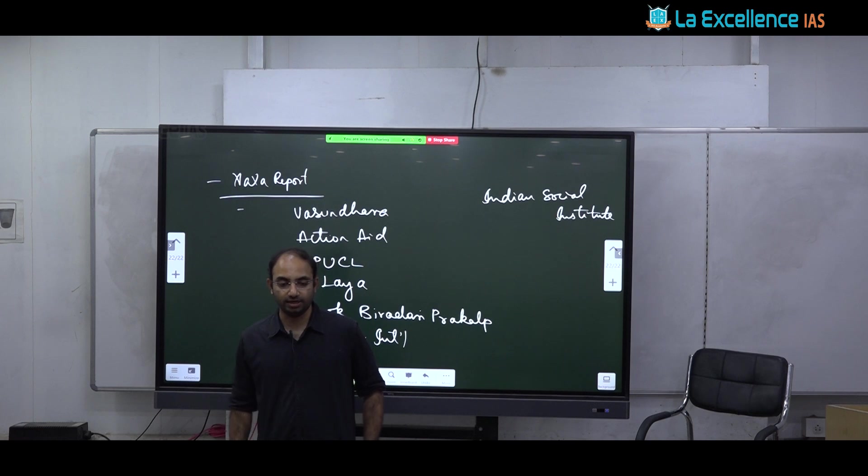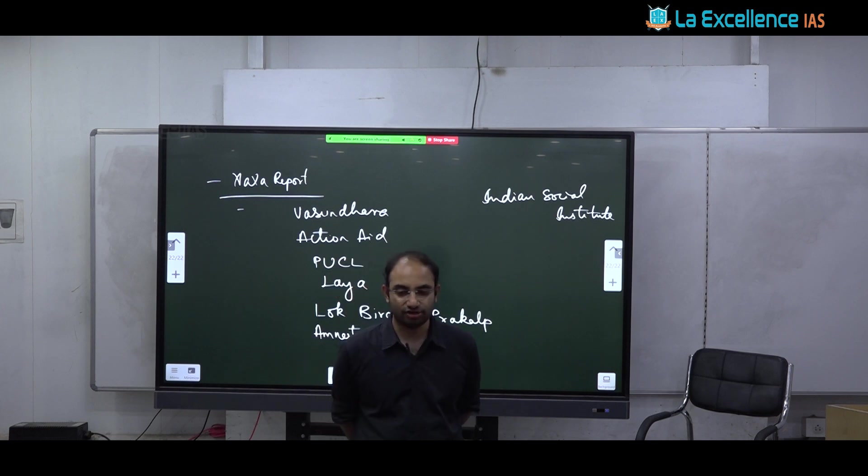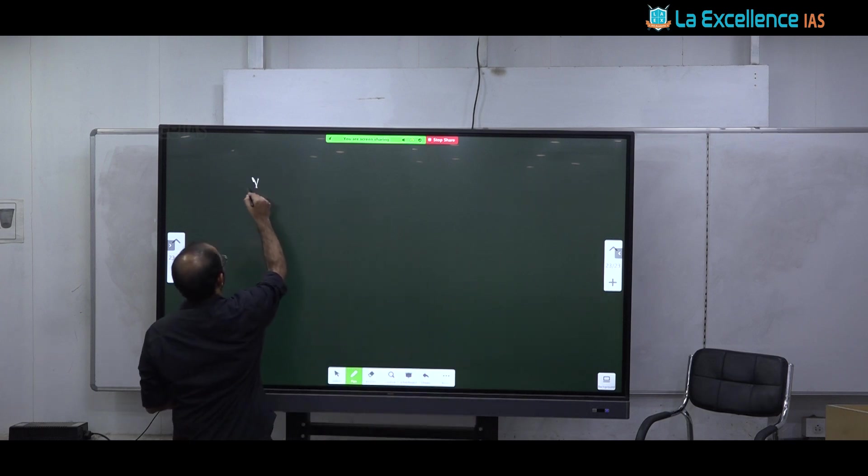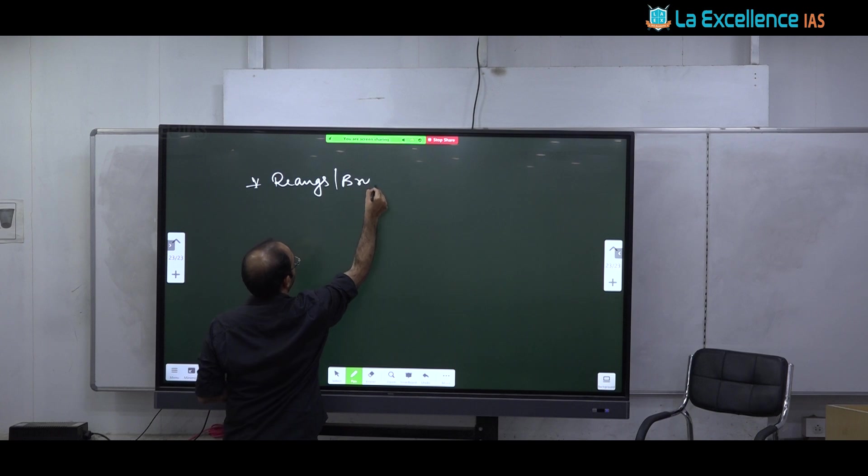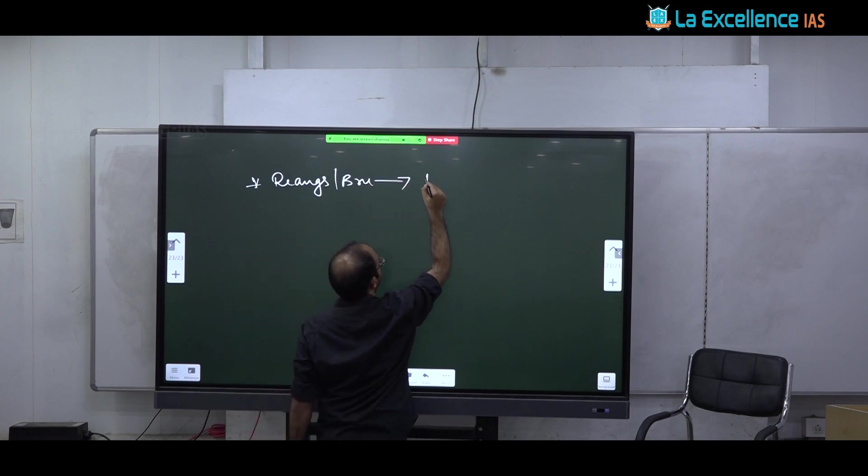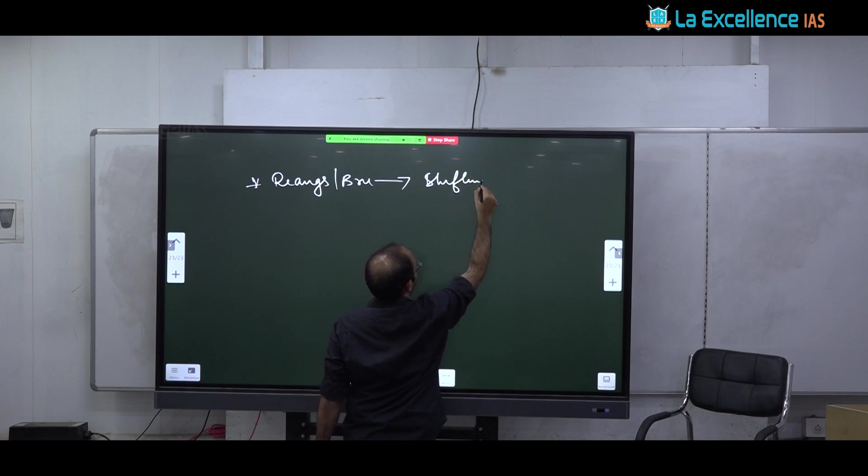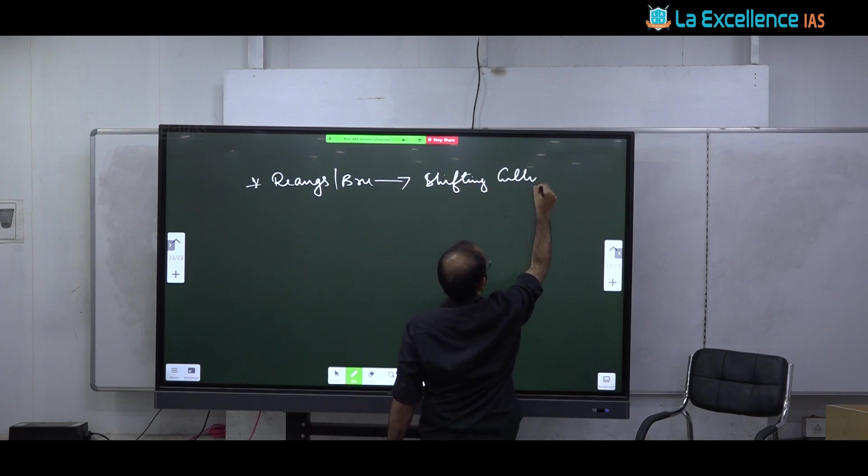4C is shifting cultivators. Even for this, I posted an article in the group. Linked to an article that discusses how shifting cultivation is increasingly becoming difficult. Because of climate change, because of population pressure, because of depletion of forests. And what are the alternatives for shifting cultivators. In fact, we have famous case study of how Riyangs, Riyangs what is other name for Riyangs, Brew. Brew people in Tripura, how they have been transition from shifting cultivation to agriculture.